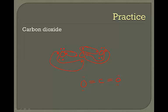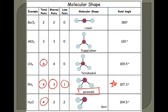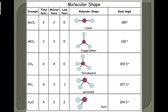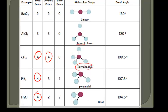When we look at the structure, we might think there are four total pairs, four shared pairs, and no lone pairs, and consider carbon dioxide to be tetrahedral. But that's not the case — tetrahedral has five total atoms, and carbon dioxide only has three total atoms.